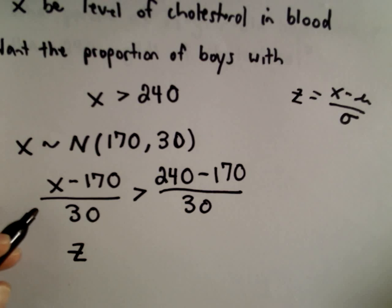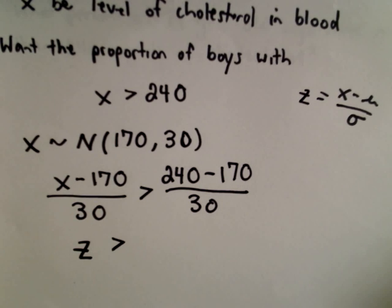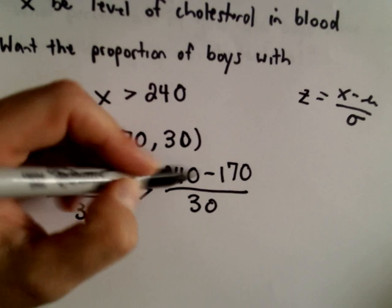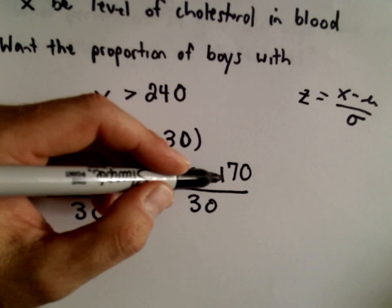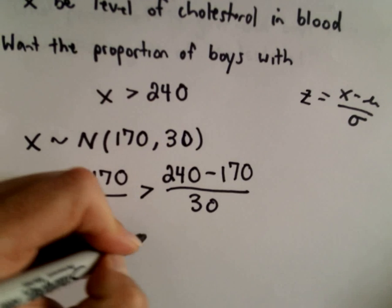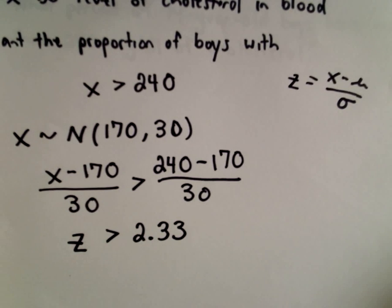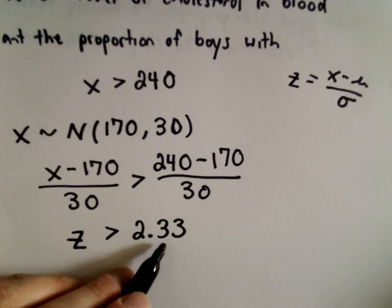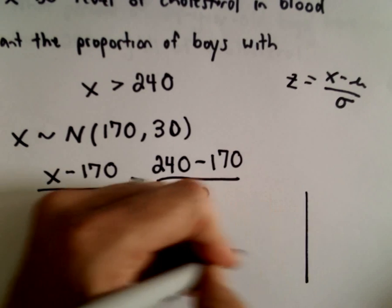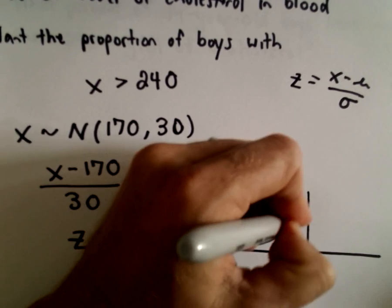On the left side, we can now write that as Z. And if you do the arithmetic, 240 minus 170, that's 70. 70 divided by 30 is going to be roughly 2.33. I'm going to read off the value 2.33 from my table of Z scores.